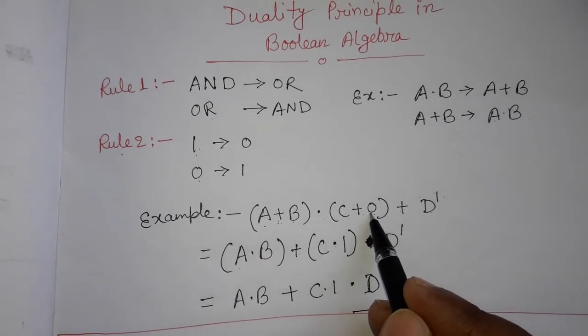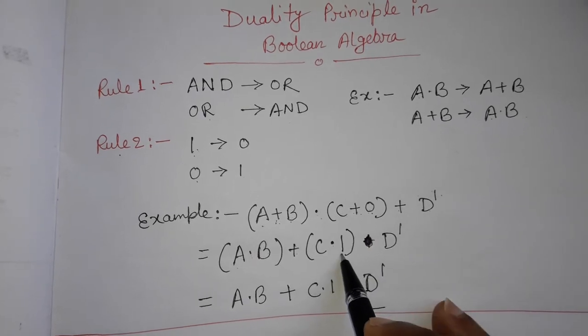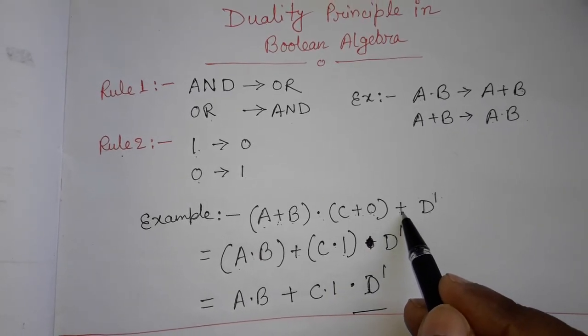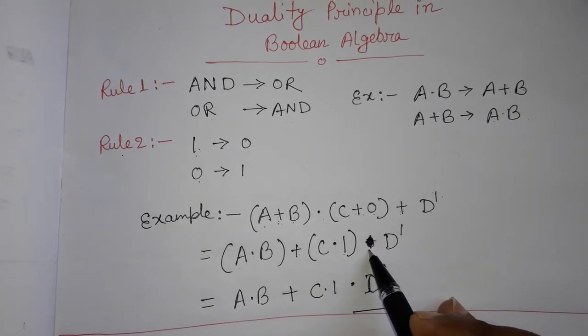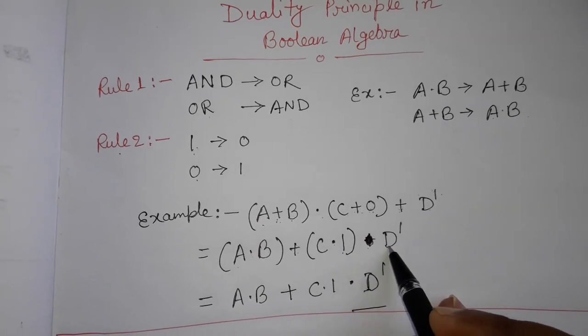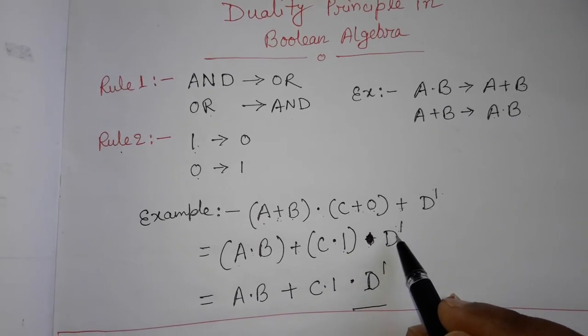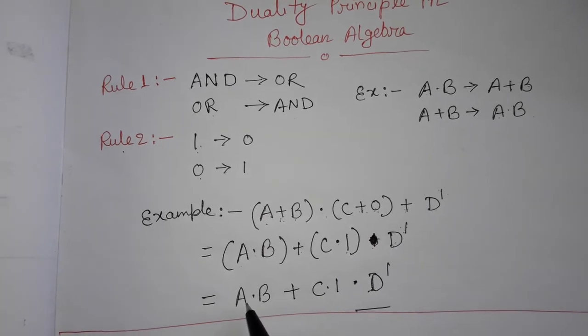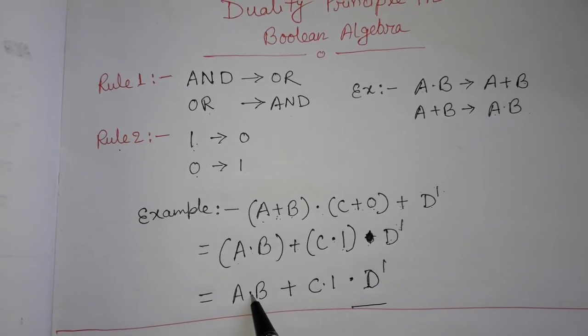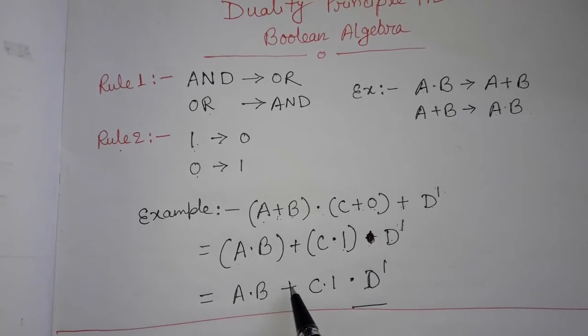And instead of 0 we will write 1. And instead of plus, that is OR, we will write AND. D complement will be unchanged. So final result: A dot B, that is A AND B, plus C AND 1 AND D complement.